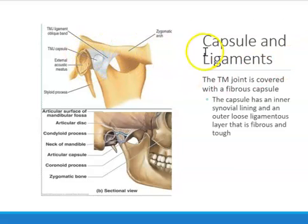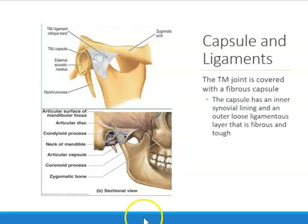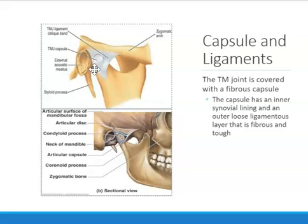There is also a capsule — a fibrous capsule that covers the entire TMJ joint. If you were to open the capsule, you would literally see the TMJ joint inside. The TMJ is covered by this fibrous TMJ capsule.